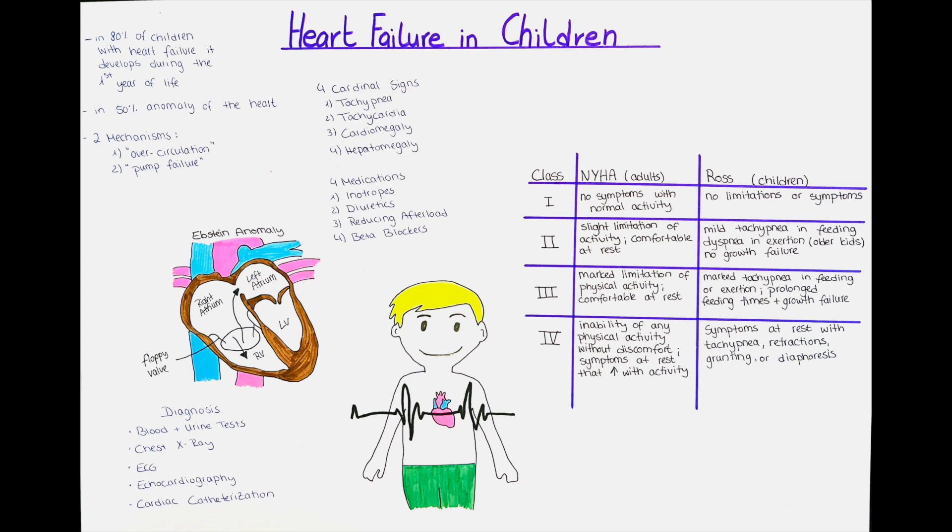The treatment of heart failure is done with four different types of medications that can be used according to the needs and presentation of the patient. The first group is inotropes. They are used for heart failure with reduced ejection fraction. They stimulate the heart to contract more effectively and increase the pumping force, and may also increase the heart rate at which a heart pumps.